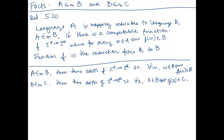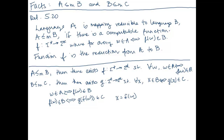From this we know: if a string W is in A, then F of W must be in B. And F of W in B implies that G of F of W is in C — here substituting X equals F of W. Therefore we conclude: if W is in A, then G of F of W is in C.